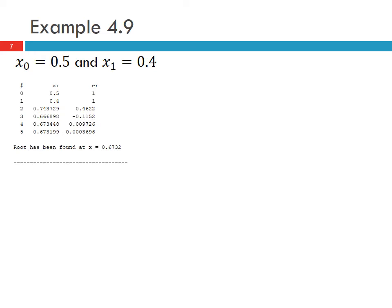This is the output from the MATLAB code with x_0 = 0.5 and x_1 = 0.4. You can see that the method converges very quickly and finds the root at 0.6732. This is the approximate relative error over those iterations.